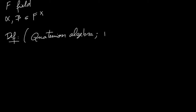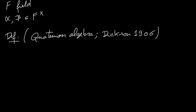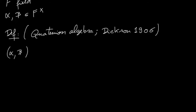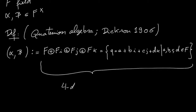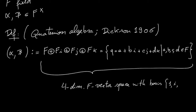Quaternion algebras were introduced by Dixon in 1906, more than 100 years ago. They are defined as follows: one considers a four-dimensional vector space where i, j, and k are formal symbols. More concretely, a quaternion is of the form a plus bi plus cj plus dk, where a, b, c, and d are elements of the field F. This is a four-dimensional F-vector space with basis one, i, j, and k.